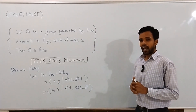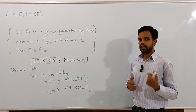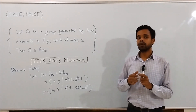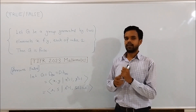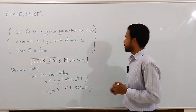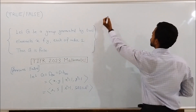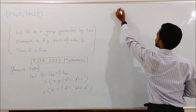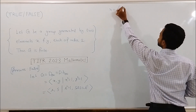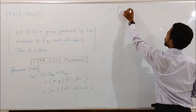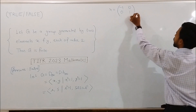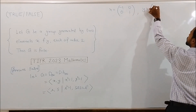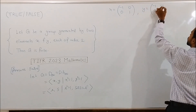We will use another model of this group, which is isomorphic to this one — a model consisting of matrices, for simplicity. Consider the matrix x with entries −1, 0, 0, 1, and another matrix y with entries −1, −1, 0, 1.